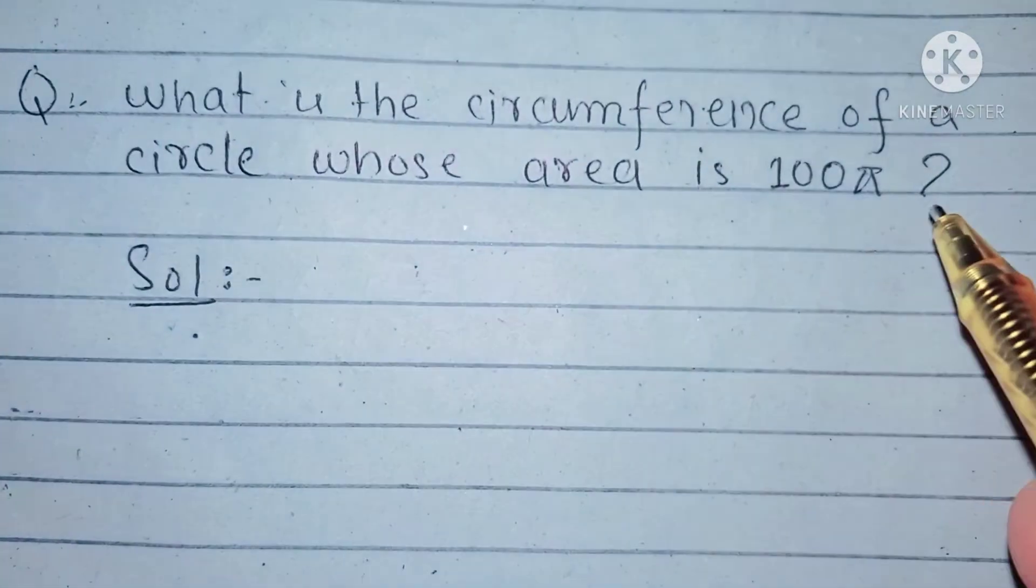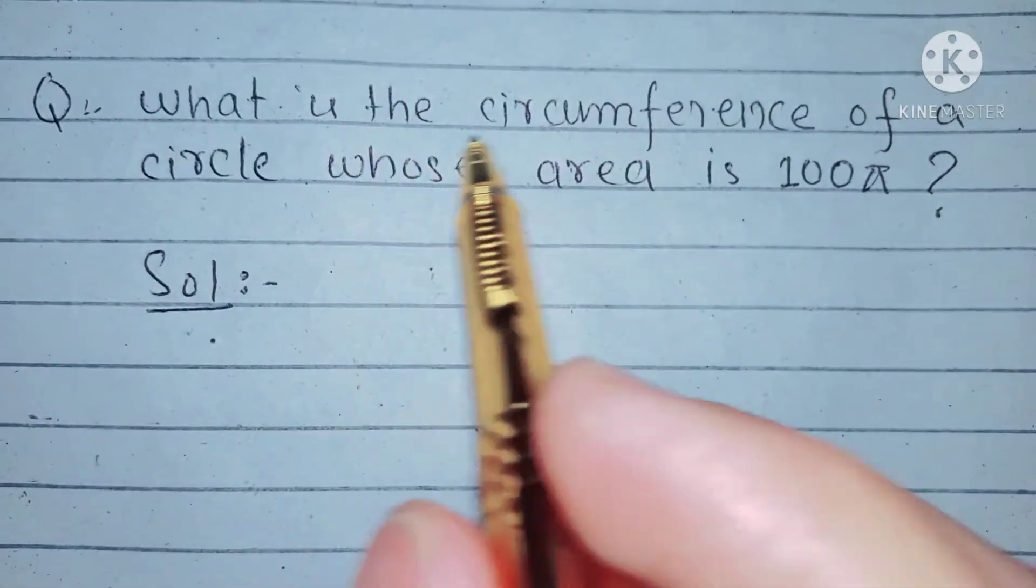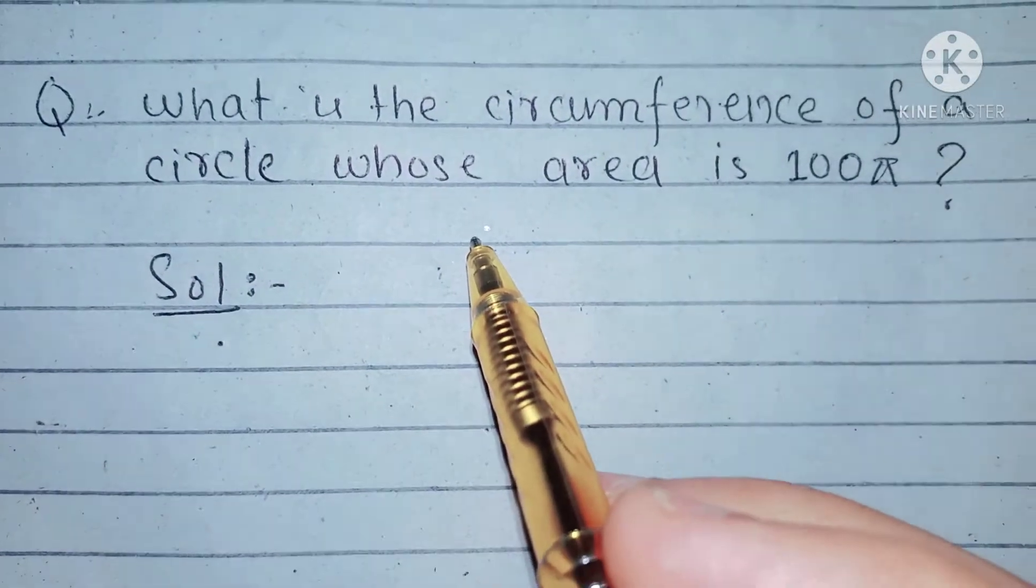We have given that area of a circle is 100π and we are required to find the circumference of a circle.